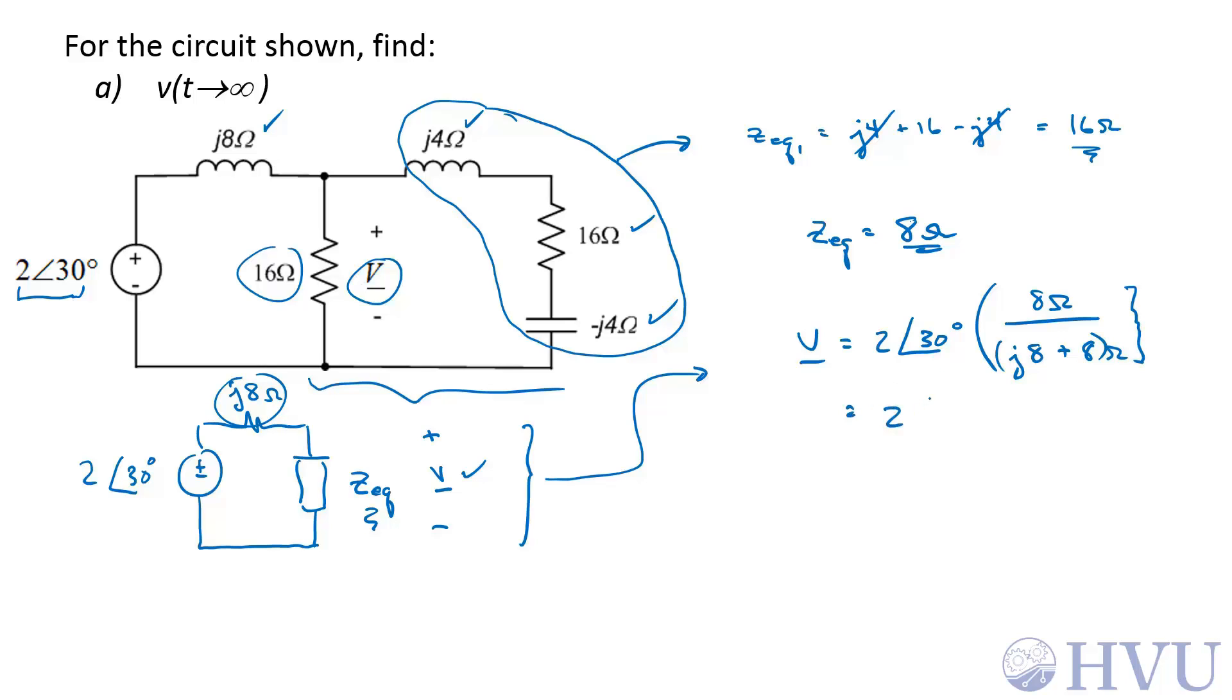So that's going to be 2 at an angle of 30 degrees times 8 over 8 square root 2 at an angle of 45 degrees. This 8 cancels with this 8, so this will be 2 over square root of 2, 30 minus 45 degrees is minus 15 degrees.